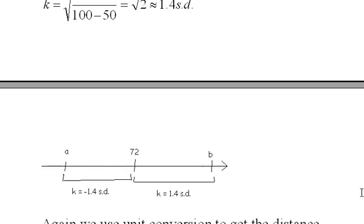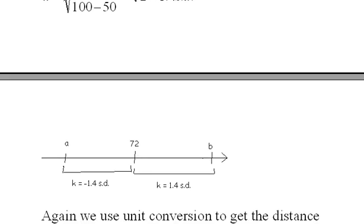So our picture now looks like this: 1.4 standard deviations this way, minus 1.4 standard deviations this way. And we need to find the number of miles. I'm going to put these up here, how far it is from here in miles, because then I can just add it to 72 and subtract it from 72.